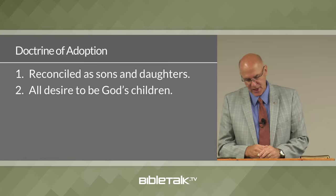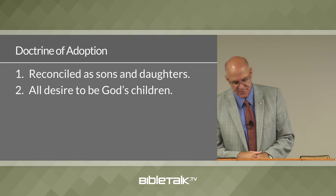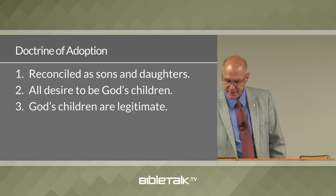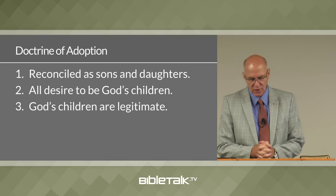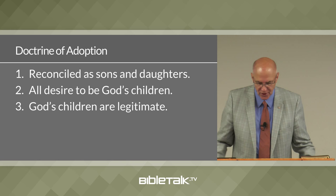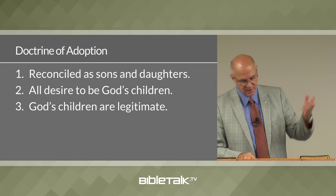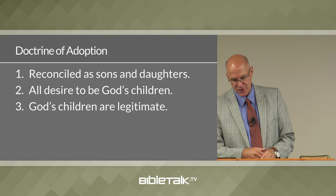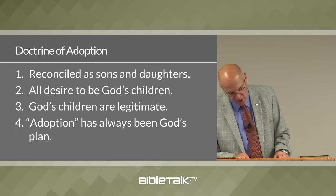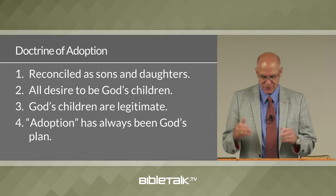Those who become God's sons and daughters through His plan know their new status because they have been legitimized in several ways: they've been sealed with God's Holy Spirit — Acts 2:38 — they call upon God as their own personal father, and they're like God's natural son Jesus in that they share His past of suffering and death and His future of resurrection and glory. In Romans 9:4, Paul talks about Israelites to whom belongs the adoption as sons, the glory, the covenants, the giving of the law, the temple service, and the promises. Paul explains that adoption has always been God's end purpose — to adopt sinners as sons and daughters, first promised to the Jews, but they refused His plan of being reconciled to God through Christ.